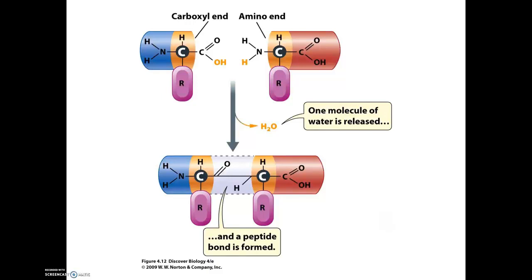So this dehydration synthesis reaction is the same type of chemical reaction that is going to be used to assemble carbohydrates, to assemble nucleic acids, and then also here with proteins. A covalent bond is formed, a molecule of water is removed, but now we have a polymer, or two monomers linked together by covalent bonds.